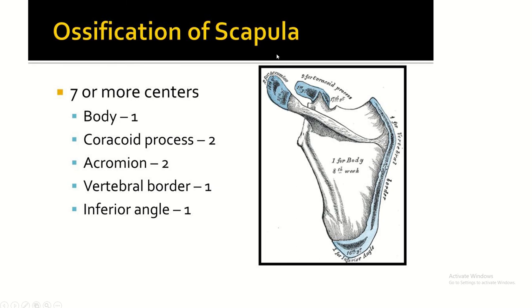Ossification of the scapula: seven or more centers — one for body, two for coracoid process, two for acromion process, one for vertebral border, and one for inferior angle.